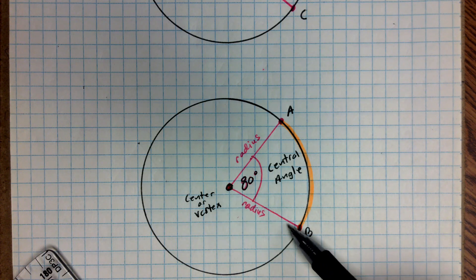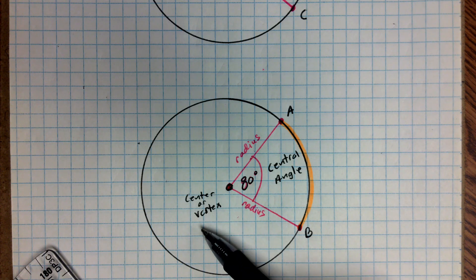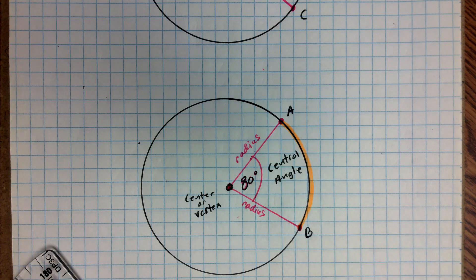So you're going to hear me use the word radius. You're going to hear me use the word central angle. And you may hear me say center or vertex. And now you know what that is on a circle. So let's go ahead and go back to the previous image.